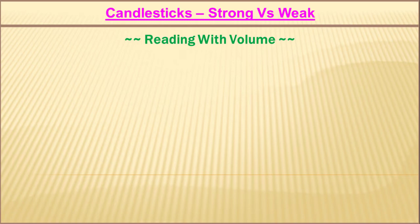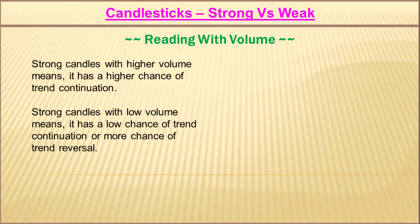Now we will understand how to read candlesticks with volume — combining volume with strong and weak candlesticks. Strong candlesticks with higher volume means there is a higher chance of trend continuation. So if you see any strong candle with higher volume than its previous candle's volume, you may assume there is a high chance the trend will continue. On the other hand, strong candles with low volume means a low chance of trend continuation and a higher chance of trend reversal.